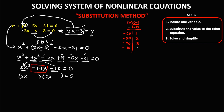Continuing the factor pairs of negative 60: negative 10 times 6, and negative 15 times 4. Adding each pair: negative 60 plus 1 is negative 59; negative 30 plus 2 is negative 28; negative 20 plus 3 is negative 17; negative 10 plus 6 is negative 4; negative 15 plus 4 is negative 11. Since the middle term is negative 17, the correct factors are negative 20 and positive 3.